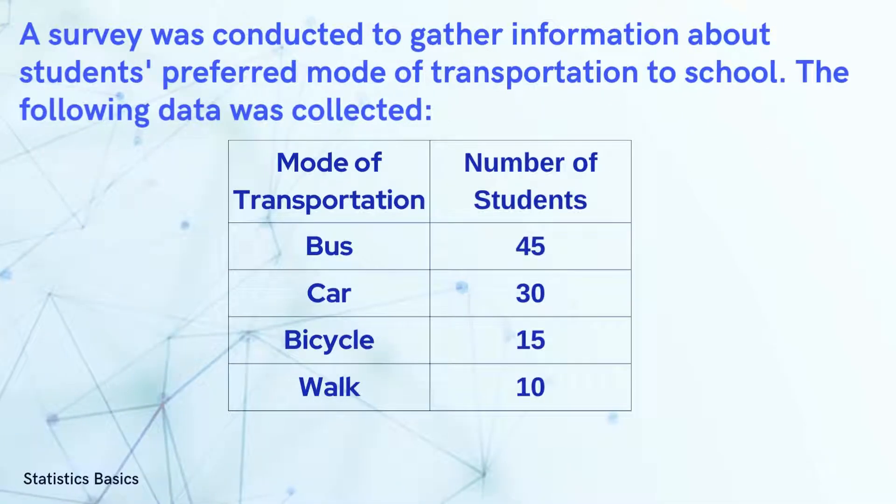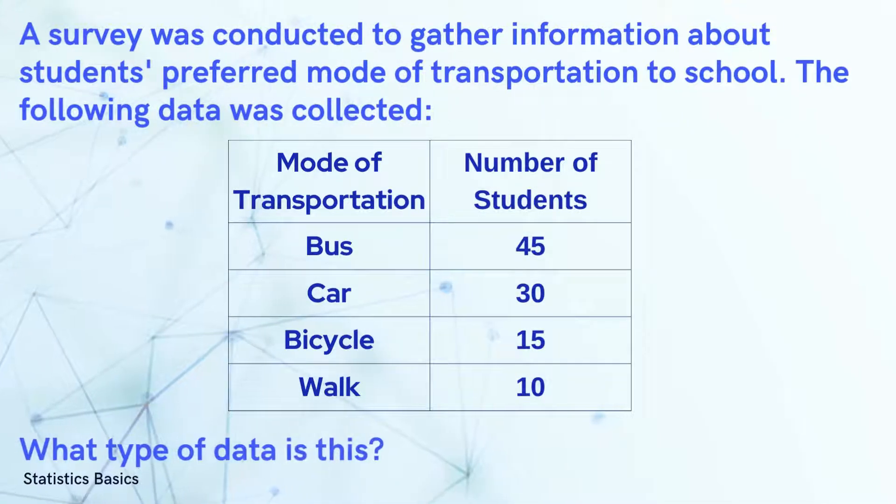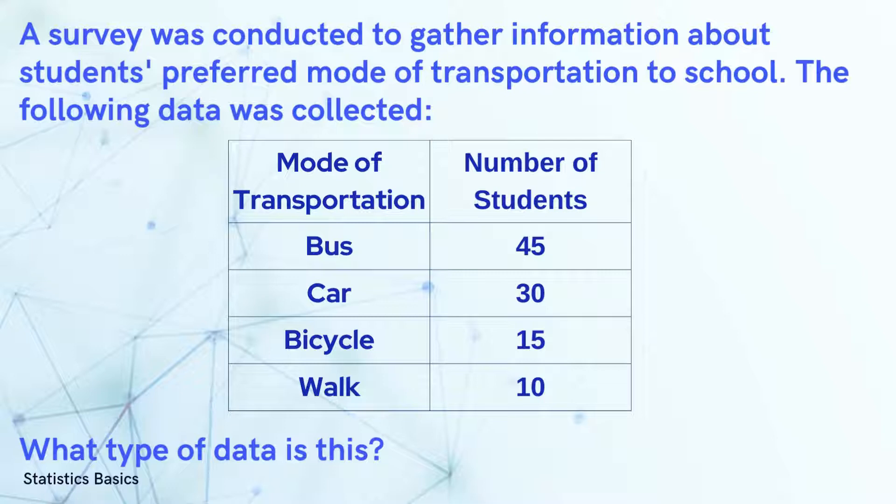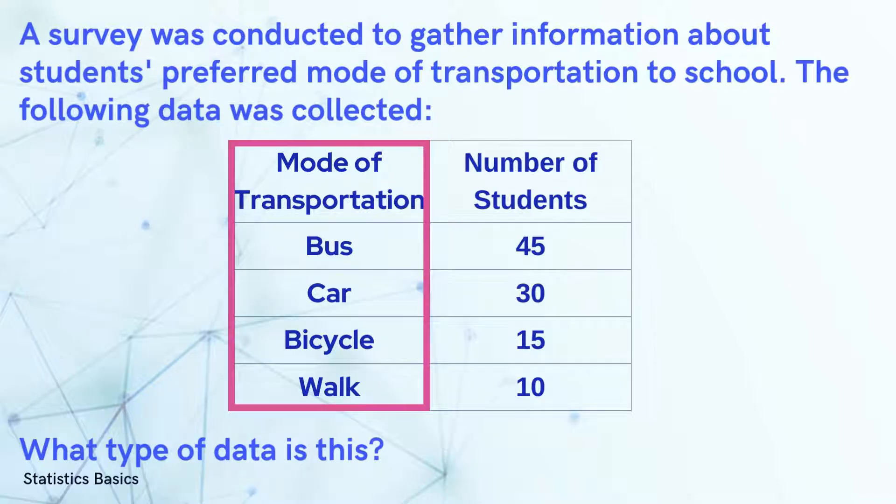Let's consider the following example where a survey was conducted to gather information about students' preferred mode of transportation to school. The following data was collected. In this example, the students are categorized by their preferred way of getting to school where each mode of transportation represents a distinct category. Therefore, the mode of transportation is categorical data.